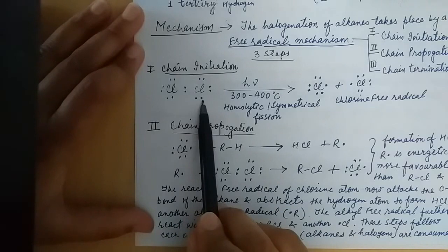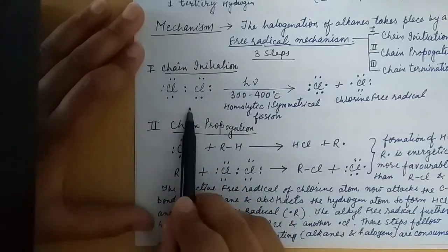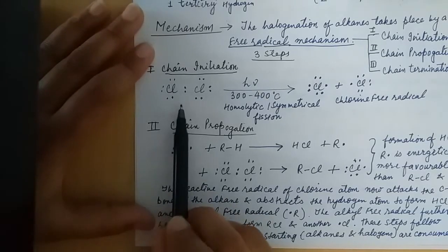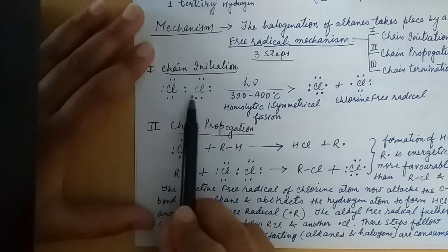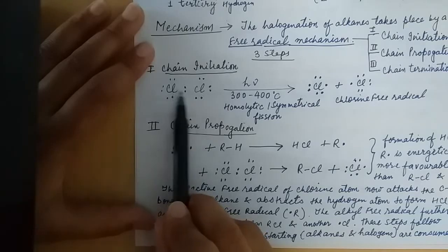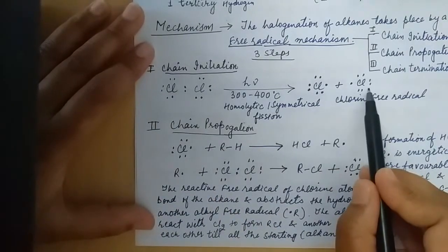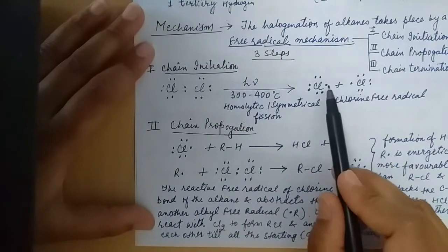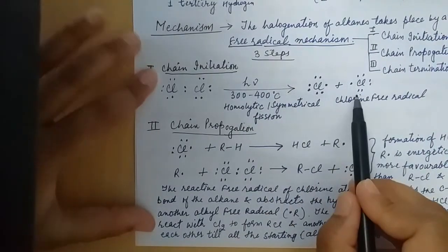In chain initiation, the chlorine molecule undergoes homolytic fission in the presence of sunlight. This is a symmetrical cleavage in which one bonded electron goes to each species, giving us 2 chlorine free radicals — one electron each.